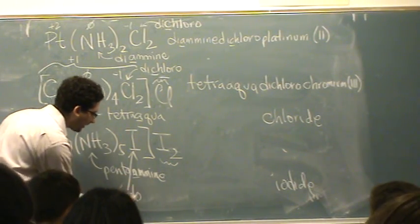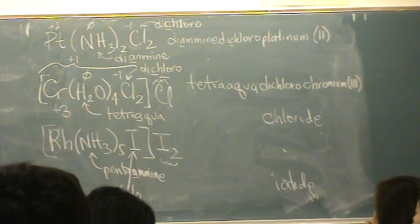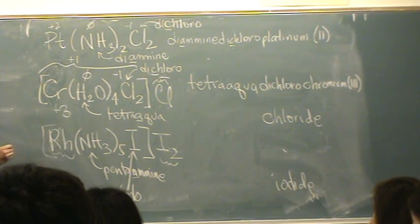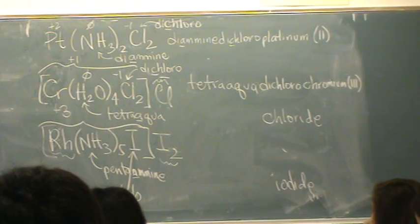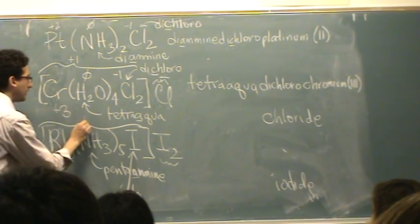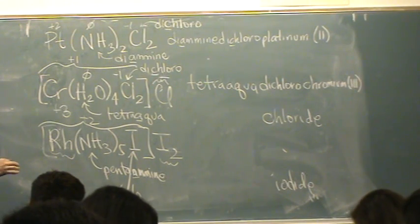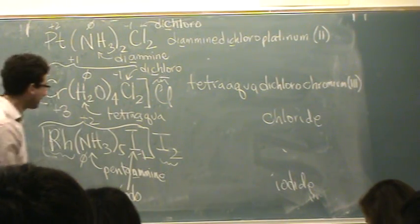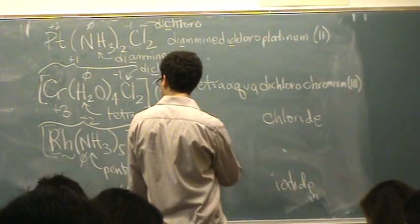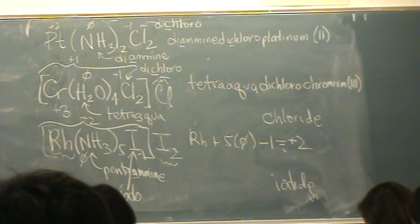So we'd go penta amine, iodo. You don't have to do mono. What's the Rh? What's the name of that element? Rhodium. So we need to know the charge on rhodium. What's the charge inside the brackets? Plus two. Think of magnesium iodide. Magnesium is plus two. It's MgI2. So this has to be plus two. So we know that ammonia is zero. Iodine is minus one. So rhodium plus five ammonia is zero minus one equals overall charge of plus two. So hopefully you can see rhodium should be three.